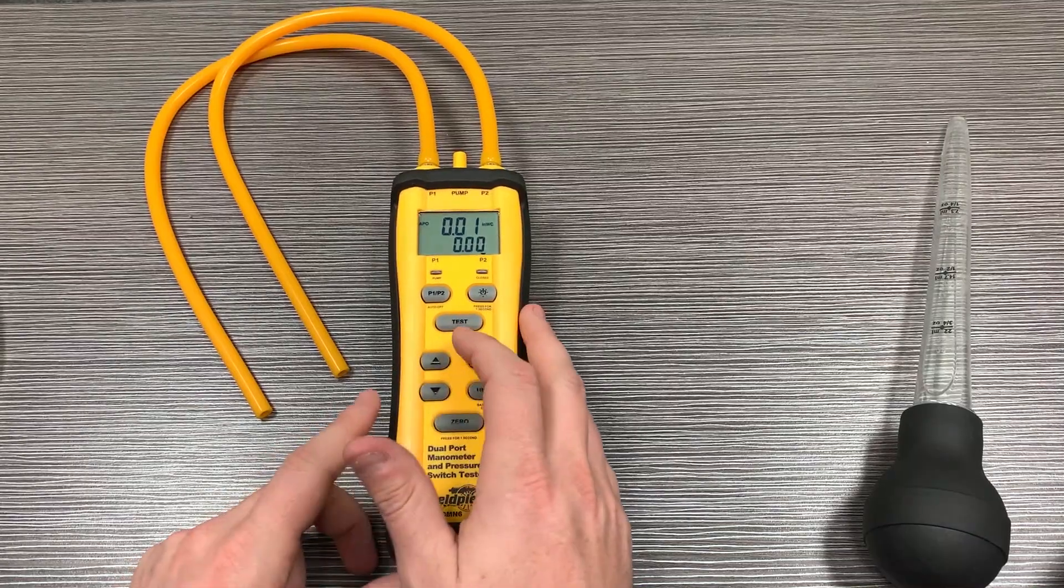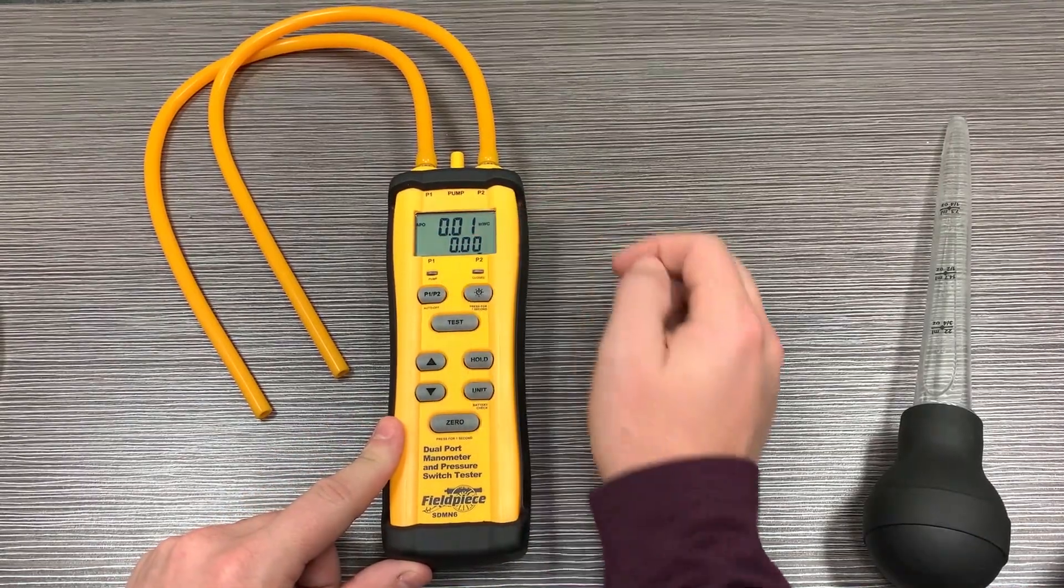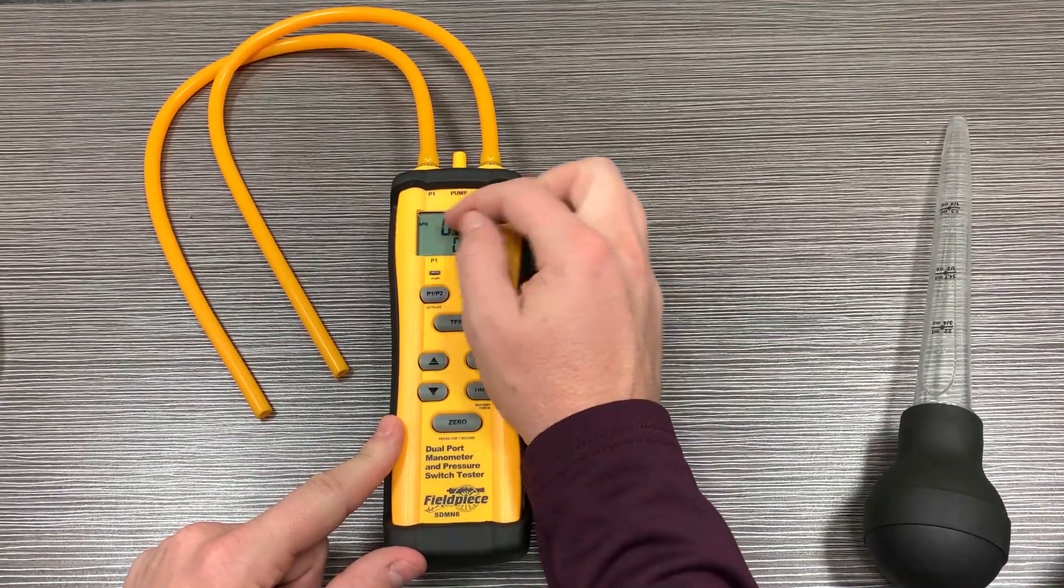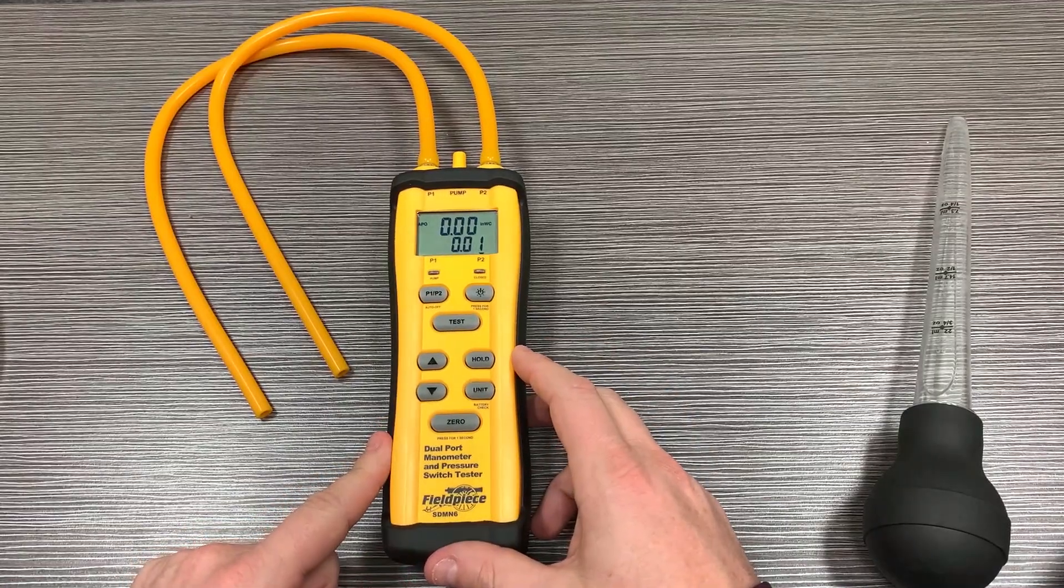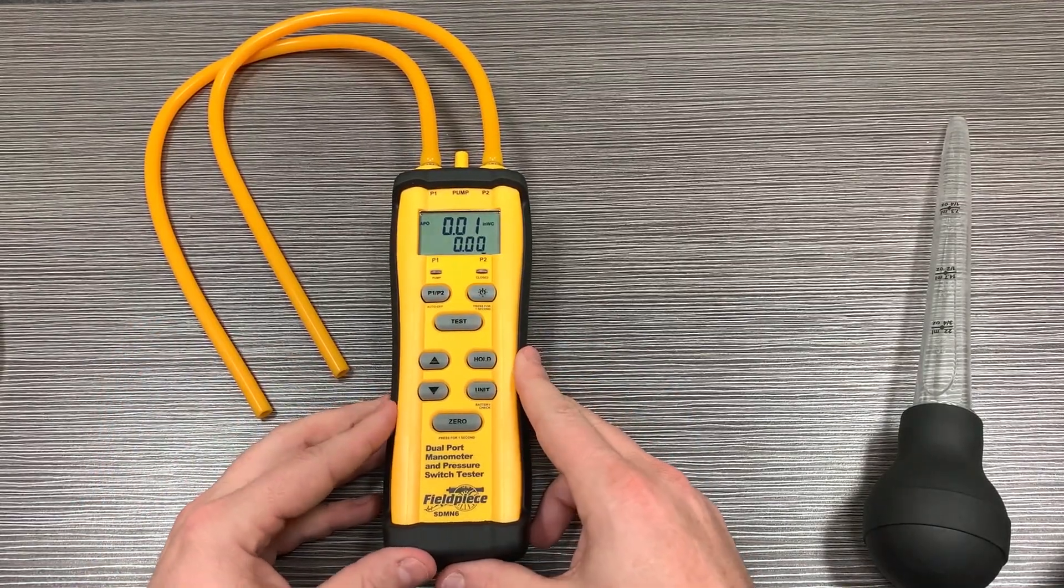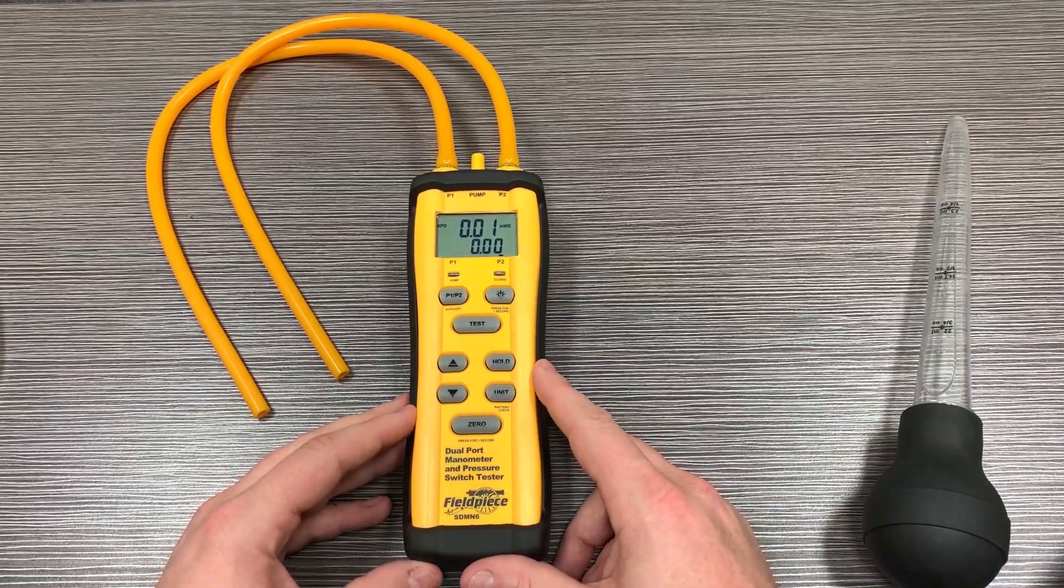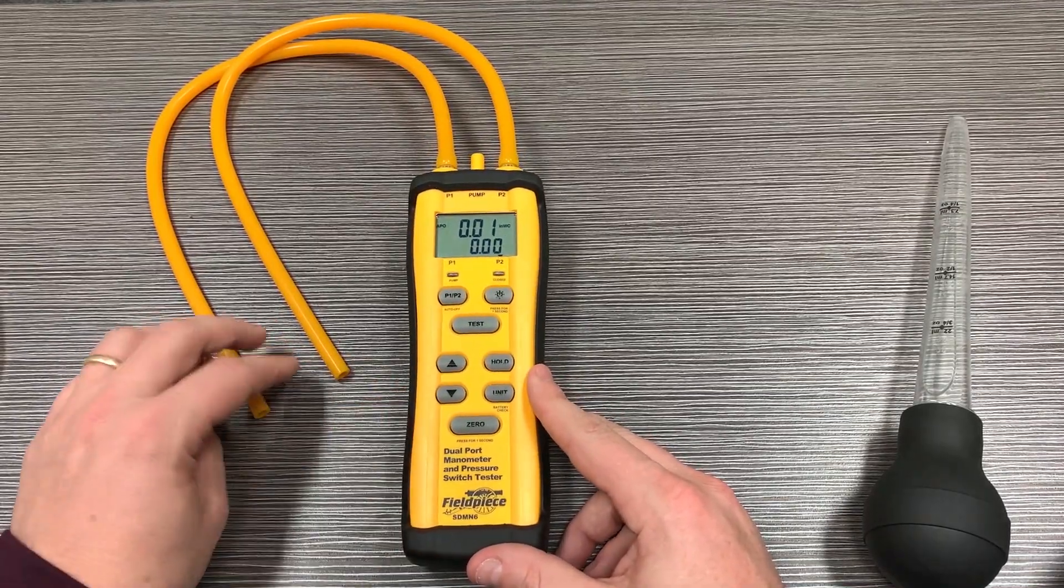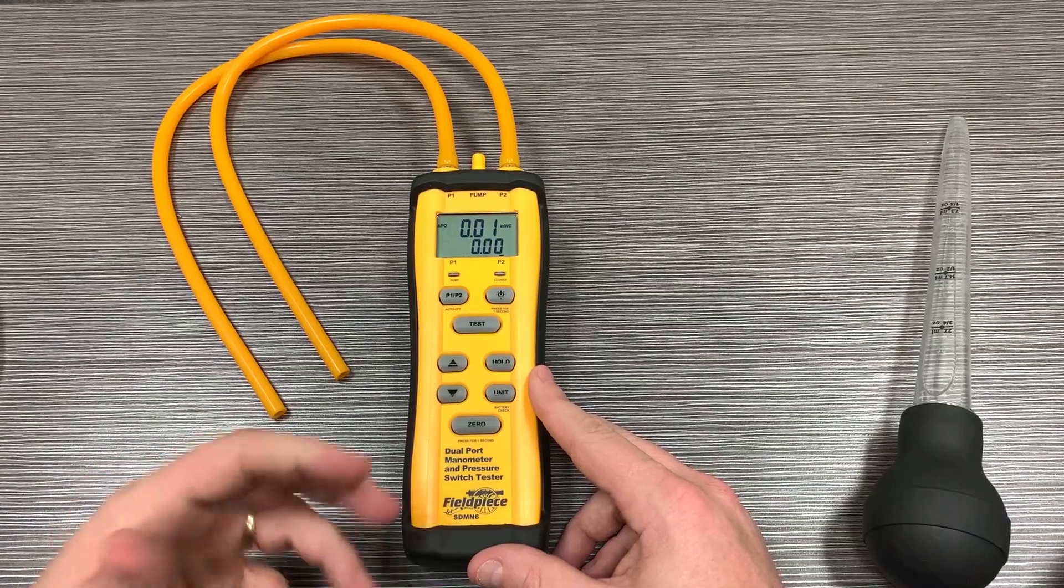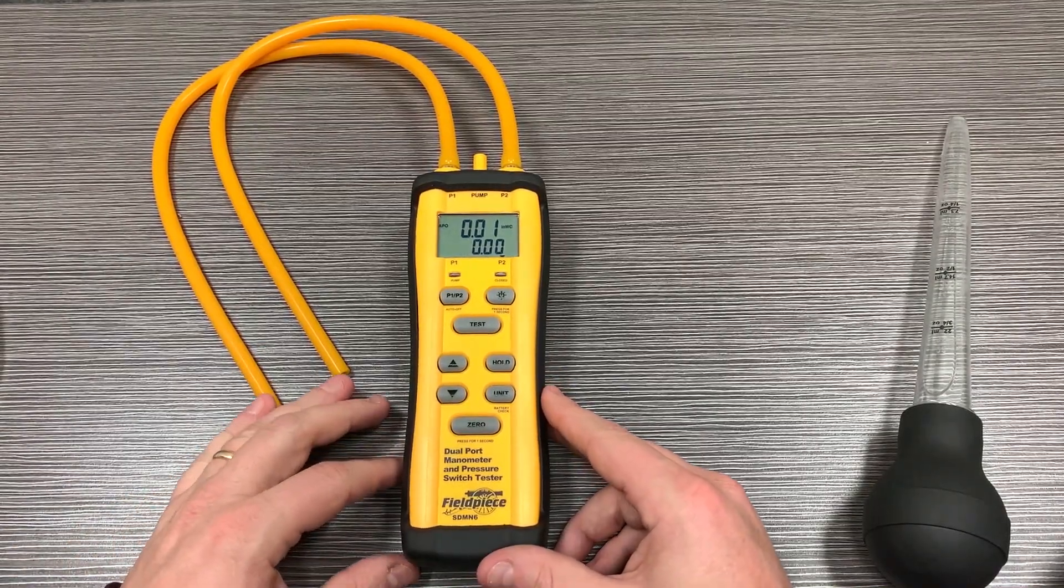The delta P doesn't mean much, so you're not going to care very much about what this number is on a gas valve. You're really going to care about this top number here. There are some gas furnaces, like some high-efficiency furnaces where the gas valve is outside of the combustion chamber, where you actually have to reference one of these tubes to the combustion chamber in order to set the gas valve accurately.